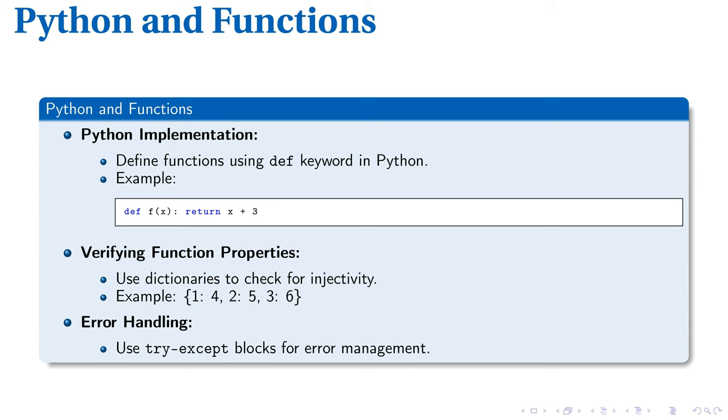Once our function is implemented, we can begin to explore its properties. Using a Python dictionary, we can verify the injectivity of a function, which ensures each input has a unique output. Consider 1, 4, 2, 5, 3, 6, where keys represent unique inputs and values or distinct outputs. This provides a way to visually examine and confirm injectivity.